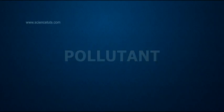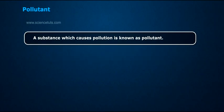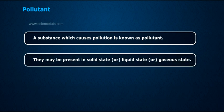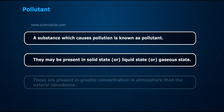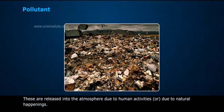Pollutant: A substance which causes pollution is known as a pollutant. They may be present in solid state, liquid state, or gaseous state. These are present in greater concentration in the atmosphere than the natural abundance, and are released into the atmosphere due to human activities or due to natural happenings.